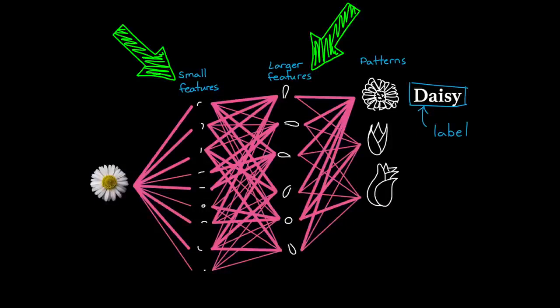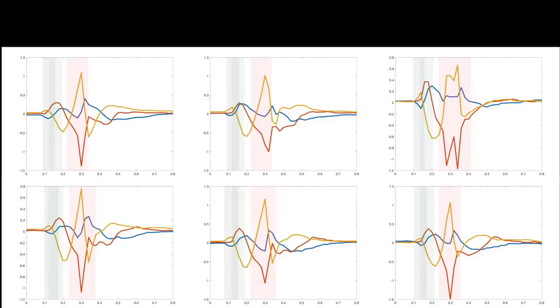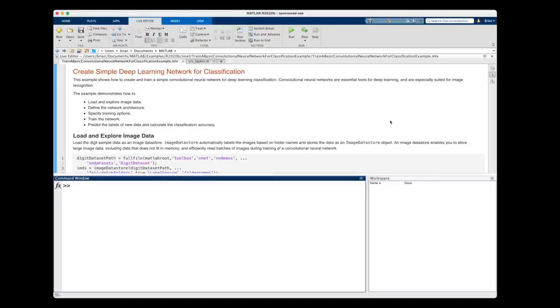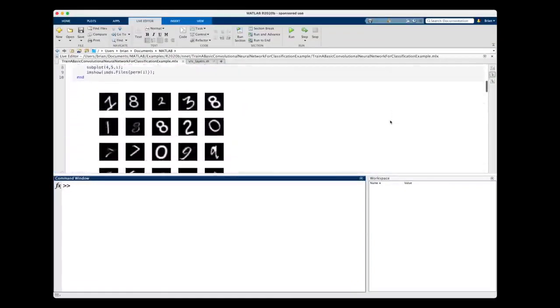Even though it's helpful to think about these features as things that people can understand, like lines and little loops and slow and fast accelerations, there's no guarantee that the network will actually converge on something this recognizable. To show you what I mean, let's run the MATLAB example called Create Simple Deep Learning Network for classification that ships with the Deep Learning Toolbox.